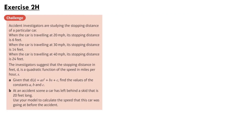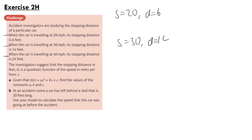From exercise 2h: accident investigators are studying the stopping distance of a particular car. When travelling at 20mph its stopping distance is 6 feet, at 30mph it is 14 feet, and at 40mph it is 24 feet. The investigator suggests stopping distance d in feet is a quadratic function of speed s in mph. Part A asks: given d(s) = as² + bs + c, find the constants a, b, and c. We use the three data points to set up a simultaneous equation system in three variables a, b, and c.